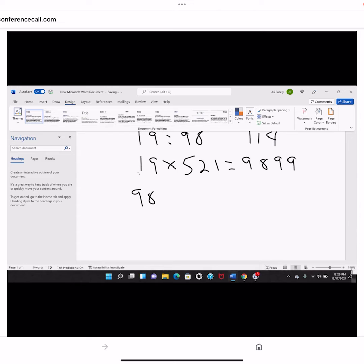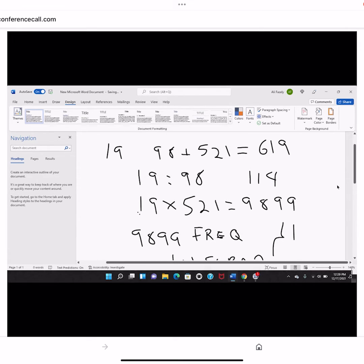9899 is the frequency of Alef Lam Mim in Surah 2 in the Quran. You see that number of Alef Lam Mim in that chapter comes directly from that statement of 19, this above statement: 98, 521, 619.